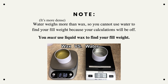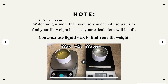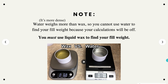Something very important to note is that water weighs more than wax, so you cannot use water to find your fill weight because your calculations will be off. You must use liquid wax — you cannot use solidified wax because it's not going to give you an accurate result. Just melt down some wax, pour it into your container, and you will accurately find your fill weight. As you can see here, these are filled to the same amount — this is water at six ounces, this is wax at seven ounces.